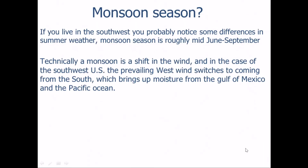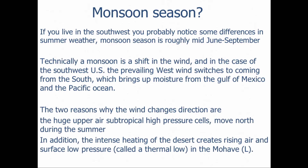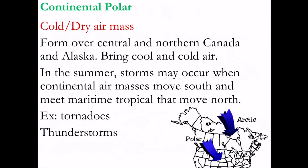Why would the wind shift? There are a couple of factors. During the summertime, Earth's tilt for the northern hemisphere means more direct sunlight, which can change global weather patterns. Also, because the southwest during summer is very hot, that hot air can create low pressure, which can make air rise and lead to turbulence, storms, and thunderstorms on its own.